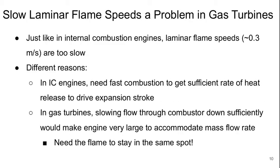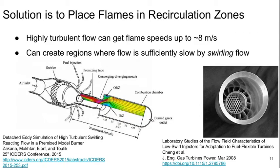Just like in internal combustion engines, the slow laminar flame speeds of hydrocarbon combustion — around 0.3 meters per second — are a serious problem in gas turbines, but for a different reason. In an IC engine, we needed fast combustion for sufficient heat release to drive the expansion stroke at reasonable RPM. In the gas turbine, slowing the flow through the combustor enough to reach laminar flame speeds would make the engine very large and heavy to accommodate the mass flow rate. So we need the flame to stay in one place with the flow moving more quickly — ideally the flame should be stationary in space. The solution is to place the flames in fluid recirculation zones, where highly turbulent flow can get flame speeds up to about 8 meters per second.